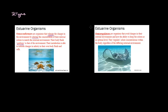Osmoregulators are pretty much the opposite. These are organisms that avoid changes in the internal environment and have the ability to keep solutes at an optimal level. They regulate solute concentrations within the body — 'regulate' is the key word. There are two examples: a starfish for osmoconformers and a stingray for osmoregulators.